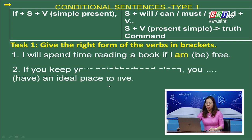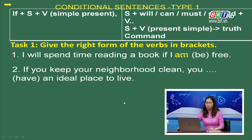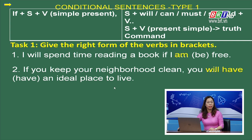Sentence 2: If you keep your neighborhood clean, you (have) an ideal place to live. Động từ have đang ở mệnh đề chính — vậy chúng ta nhìn vào công thức: will / can / must / should / or present simple / or command. Cái nào phù hợp? The answer is will have, bởi vì câu này diễn tả một điều chắc chắn: nếu bạn giữ cho xóm của bạn sạch sẽ, bạn sẽ có một nơi lý tưởng để sống.